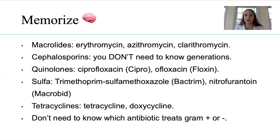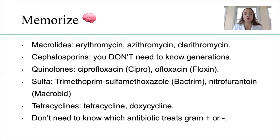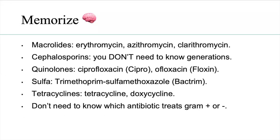Levaquin is your fluoroquinolone for up north — your lungs. So Levaquin is for your immunocompromised patients with community-acquired pneumonia. Don't give them Cipro — Cipro's for down there. When we talk about sulfa drugs, Bactrim is a sulfa drug. Macrobid is not a sulfa drug — it falls under its own category. Do not think that macrobid is a sulfa because it's not.